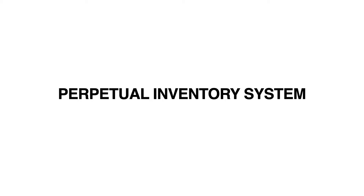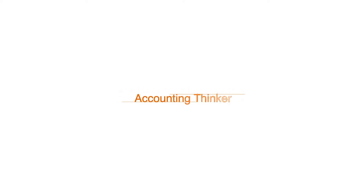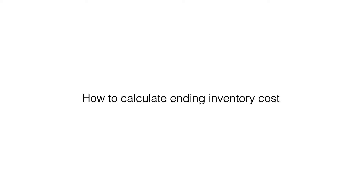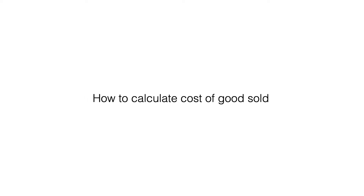Let's see how the perpetual inventory system works using the first-in-first-out method. What you will learn: how to calculate ending inventory costs, how to calculate cost of goods sold, and how to calculate gross profit.